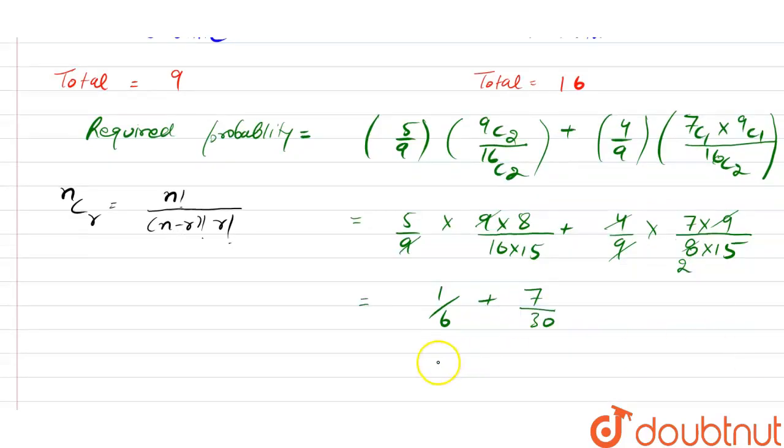After solving this, it will finally equal 5 plus 7 divided by 30, which equals 12 by 30. After solving, it equals 2 by 5. This will be our required probability and our final answer for this question.